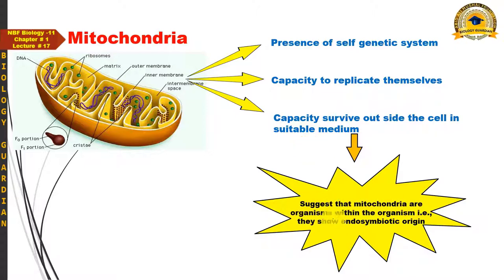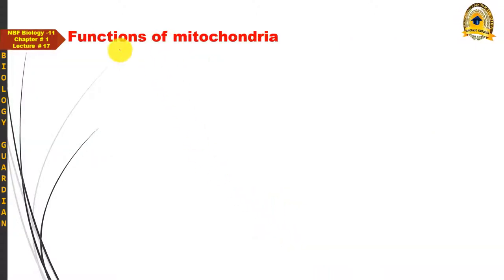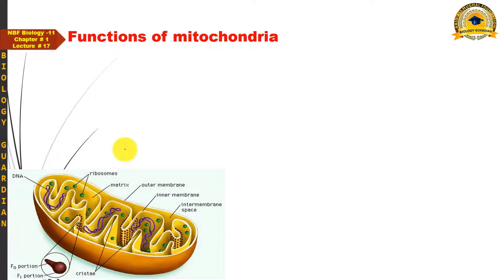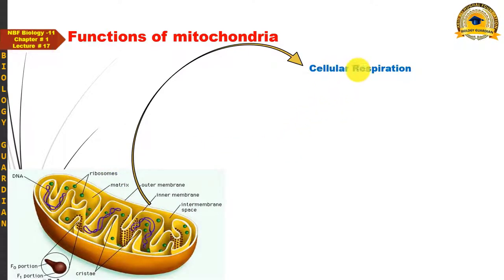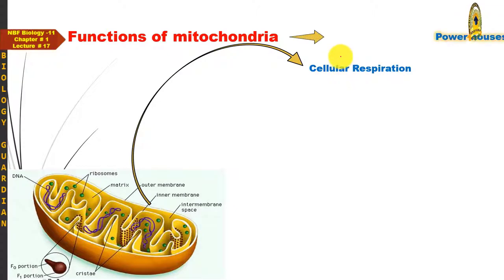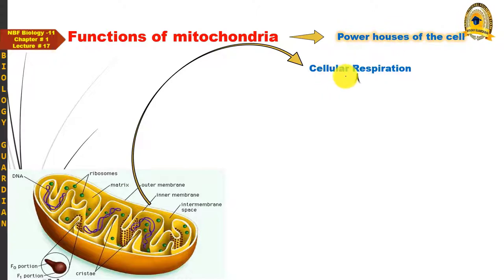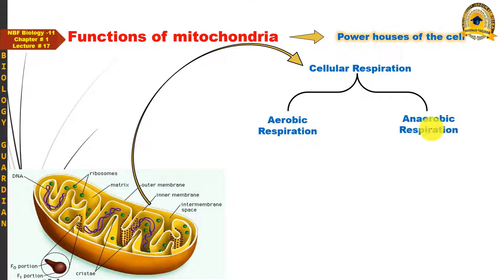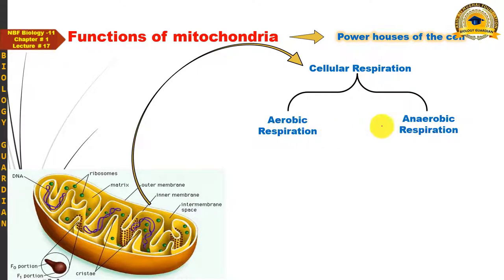As far as the functions of mitochondria are concerned, mitochondria are involved in cellular respiration — the process in which complex molecules are broken down and energy is released in the form of ATP. For this reason, mitochondria are called the power houses of the cell. The question arises: which respiratory pathway is linked to mitochondria?